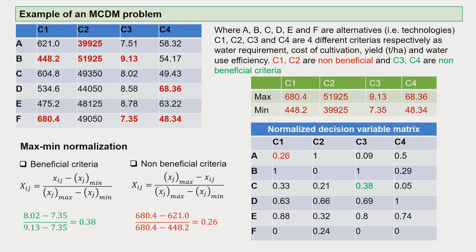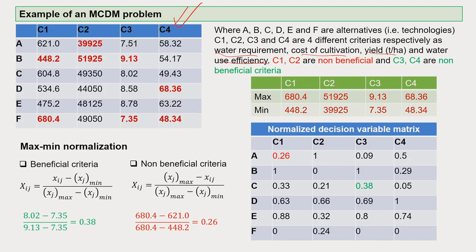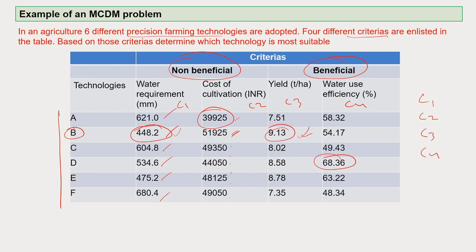Here A, B, C, D, E, F are the alternatives, and C1, C2, C3, C4 are the criteria: water requirement, cost of cultivation, yield, and water use efficiency. C1 and C2 are non-beneficial; C3 and C4 are beneficial. For C1, the maximum and minimum values are identified; similarly for C2, C3, and C4. Maximum-minimum normalization can be applied here.